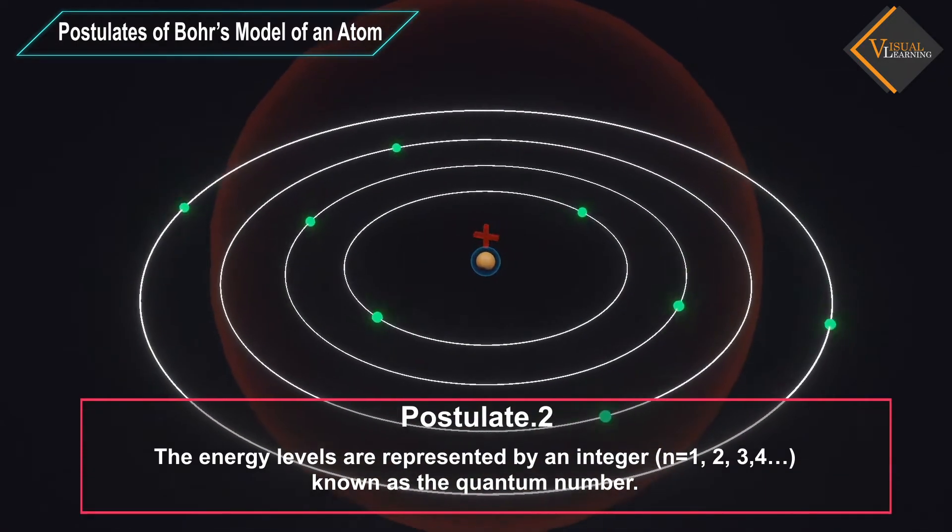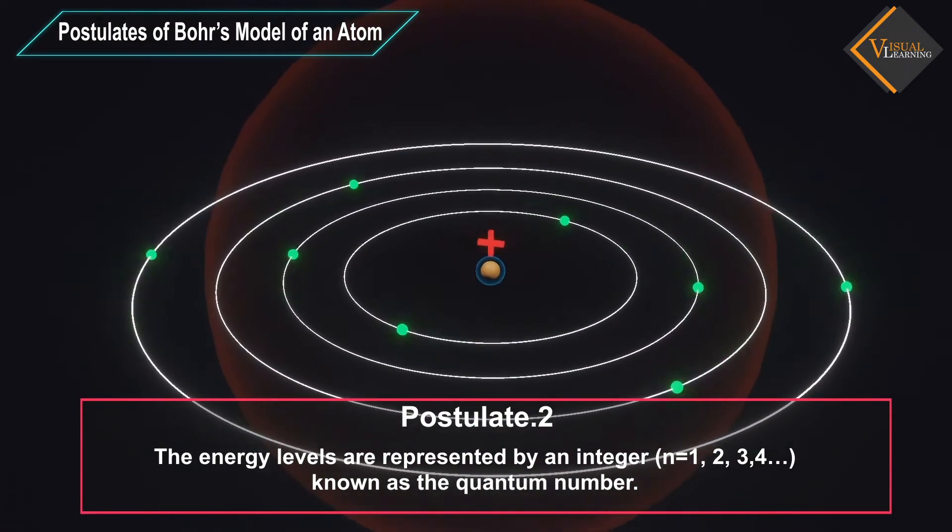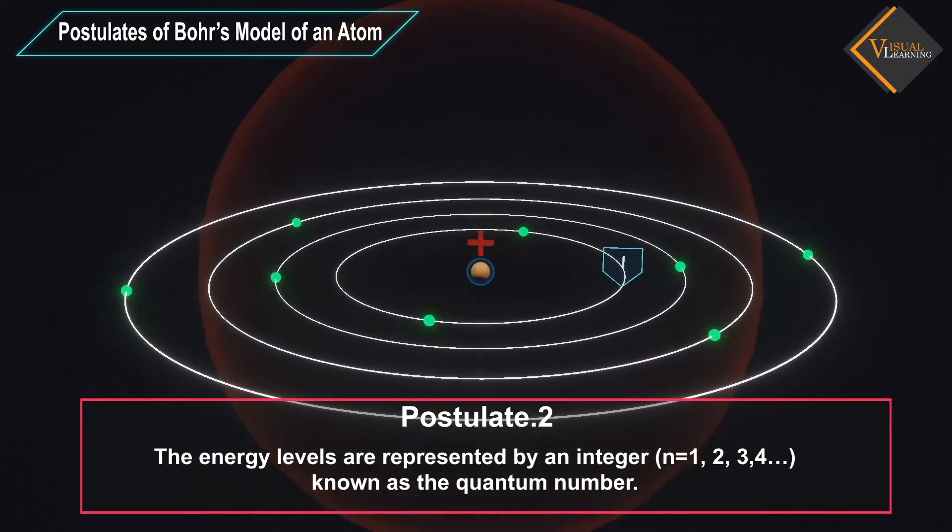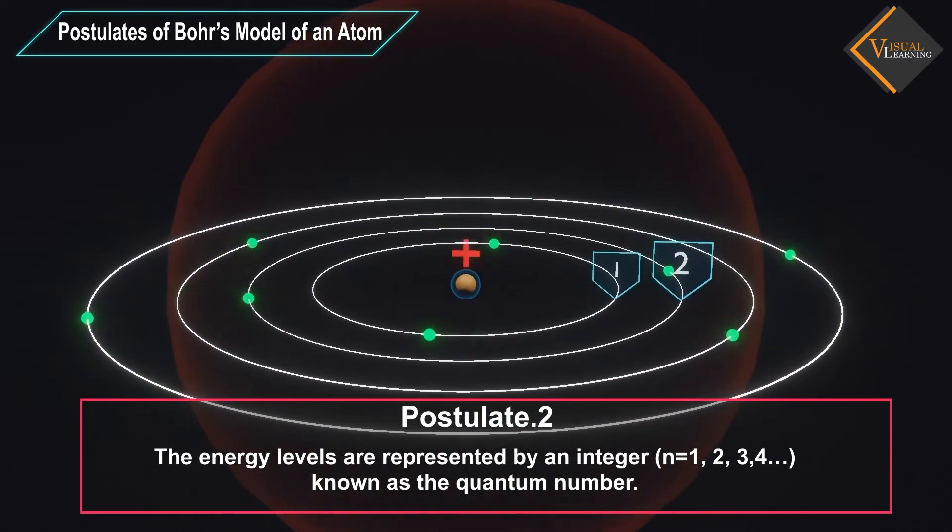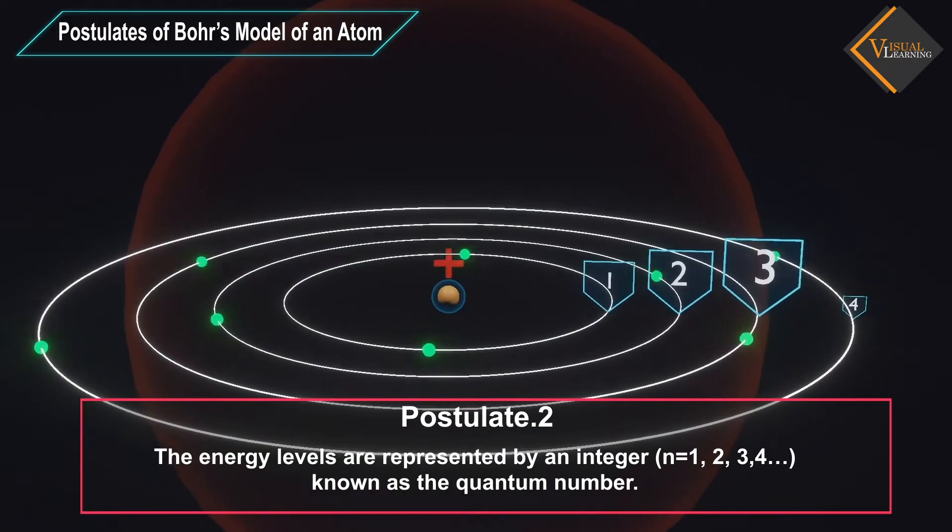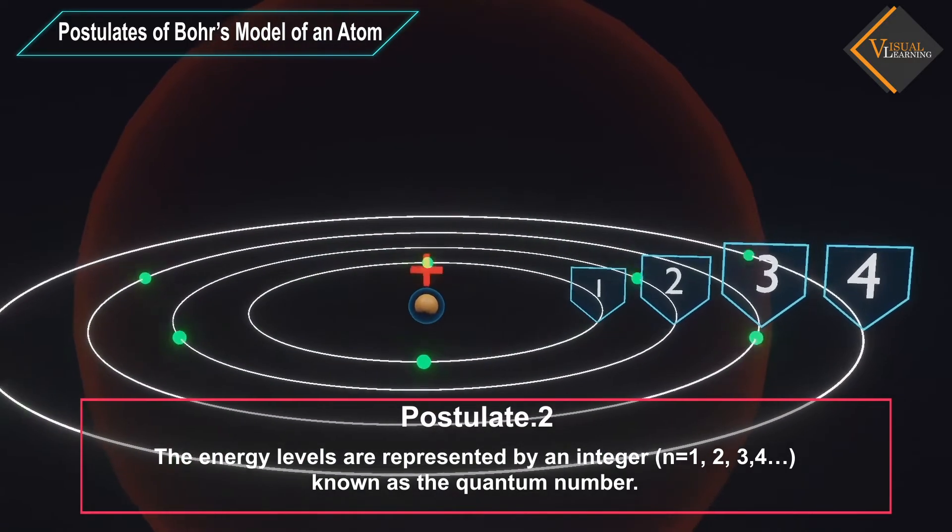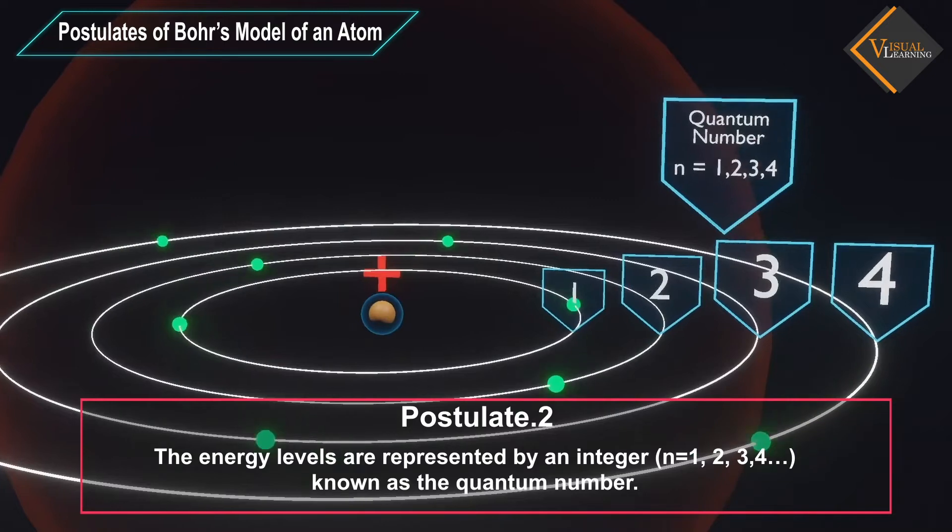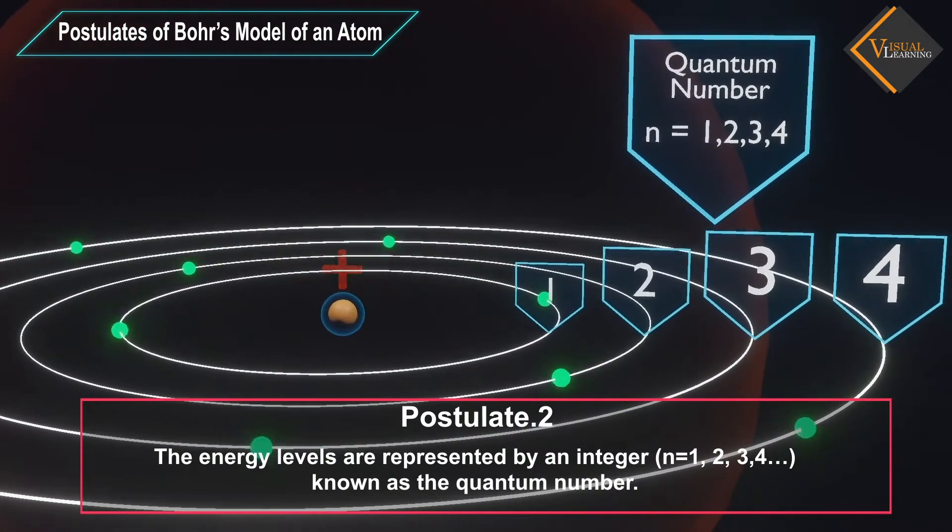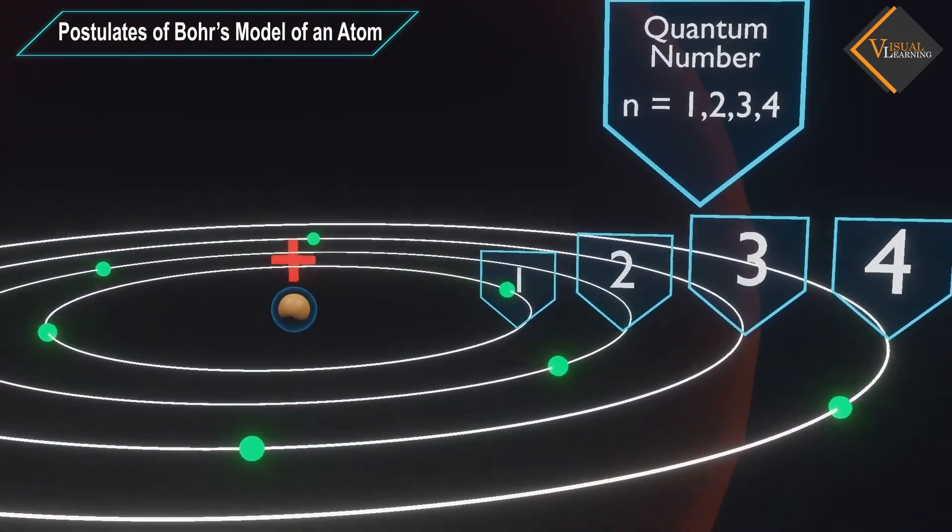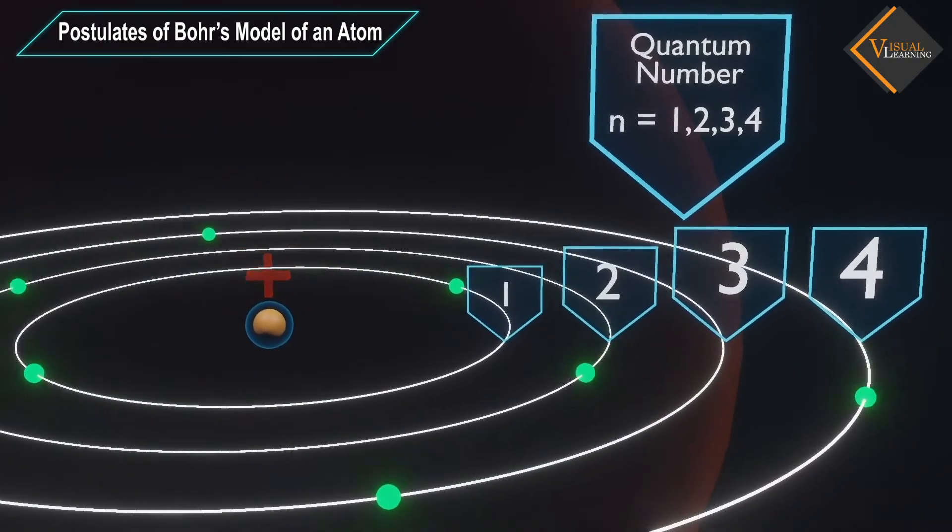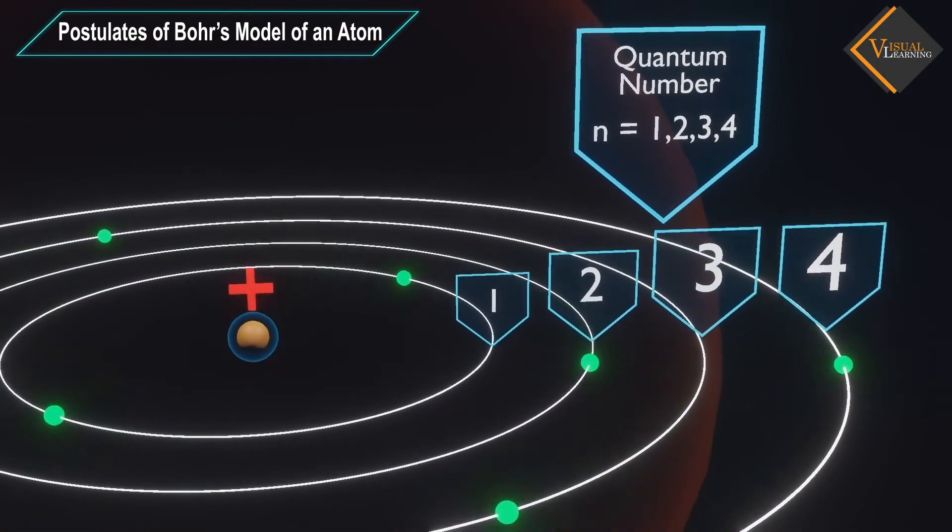The energy levels are represented by an integer, like 1, 2, 3, 4, and so on. These numbers are known as the quantum number. This range of quantum number starts from the nucleus side with 1, having the lowest energy level.